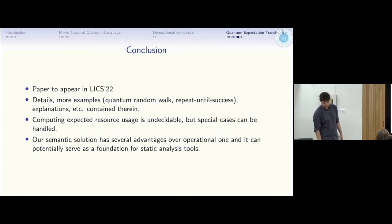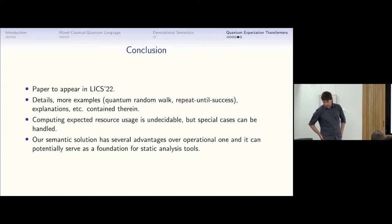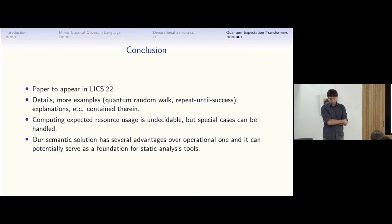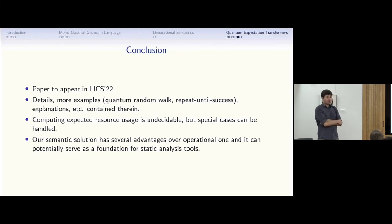In the paper we have more non-trivial examples such as quantum random walks and repeat-until-success algorithms. To summarize: computing the expected resource usage of a quantum program is undecidable, but special cases can be handled. The mathematical denotational semantics has several important advantages over the operational one and can serve as a foundation for static analysis and automation. Thank you for your attention.